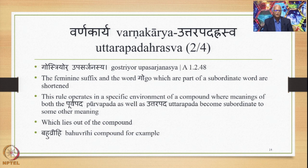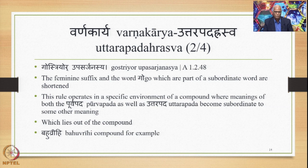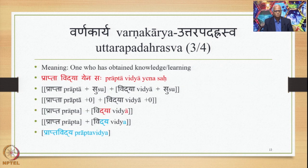Rasvonapumsake Pratipadikasya means the Pratipadika which is in the neuter gender has its final vowel shortened. Ghostriyorupa Sarjanastya means the feminine suffix and the word go, which are part of a subordinate word, are shortened. This rule operates in a specific environment of a compound where the meanings of both the Purvapada as well as Uttarapada become subordinate to some other meaning that lies outside of the compound. So obviously, Bahuvrihi Samasa is the example of this particular Sutra.